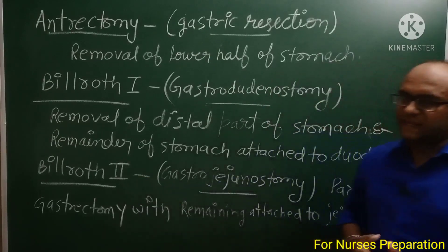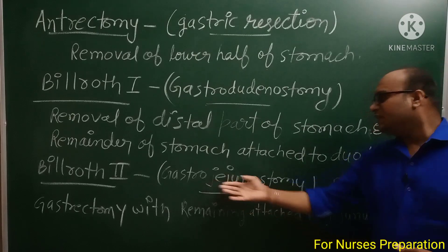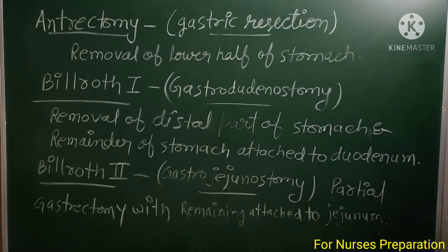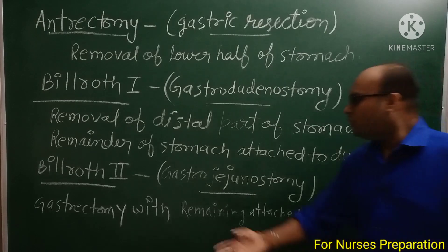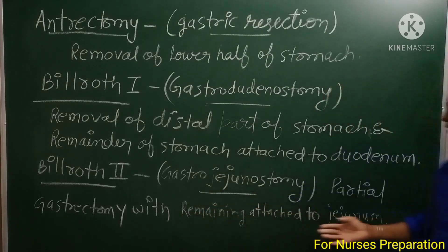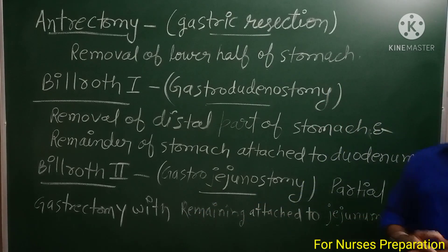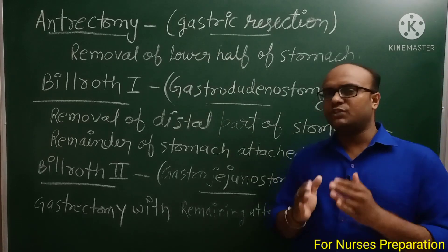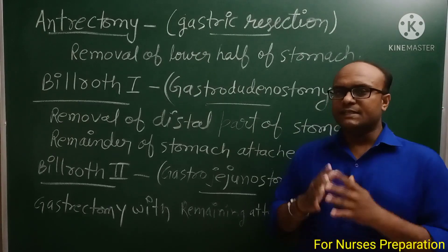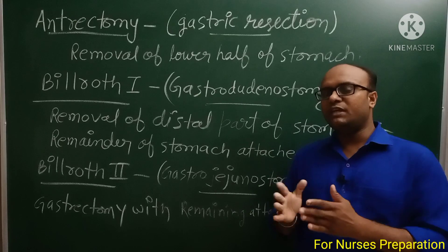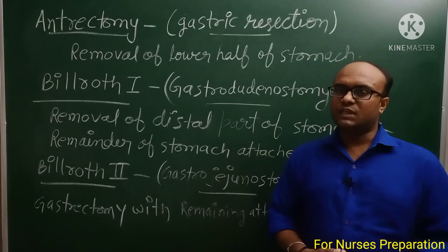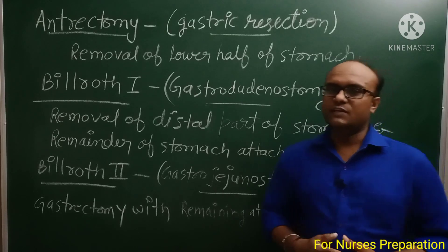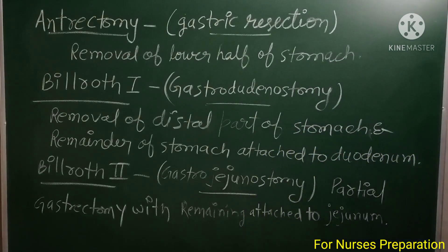Next आता है Billroth II — इस procedure को gastrojejunostomy के नाम से भी जानते हैं। It is a partial gastrectomy with remainder attached to the jejunum। यह भी partial gastrectomy का part है, जिसमें remaining portion को jejunum से attach किया जाता है।